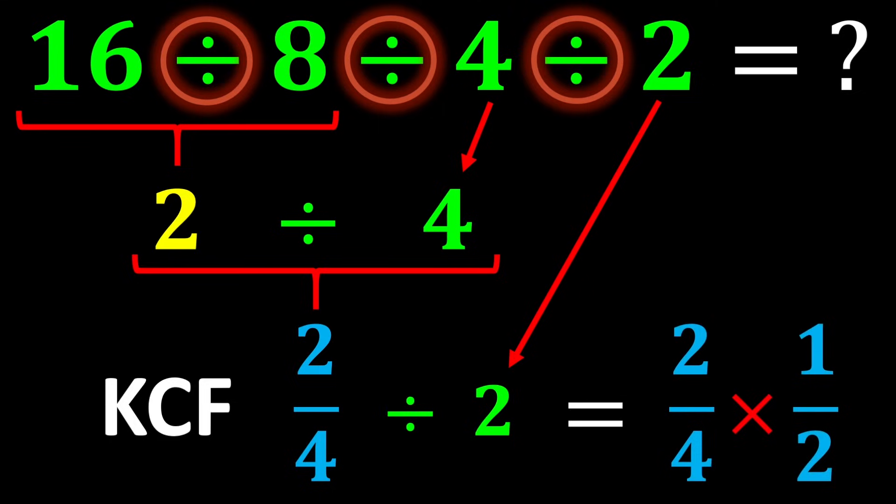Therefore, our expression changes from 2 over 4 divided by 2 to 2 over 4 multiplied by 1 over 2. The 2's cancel out, and in the end our final answer becomes 1 over 4.